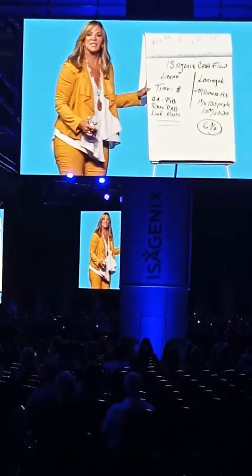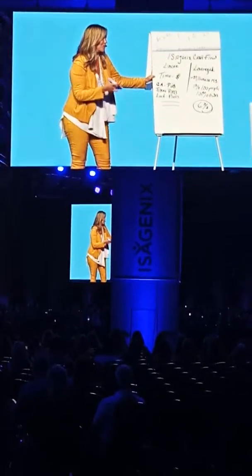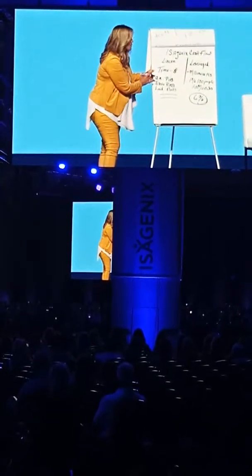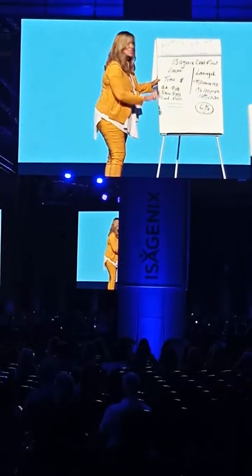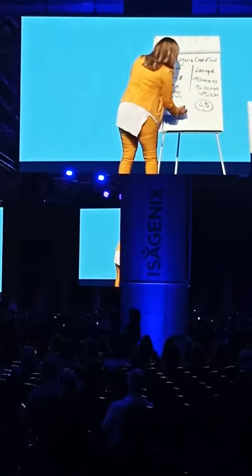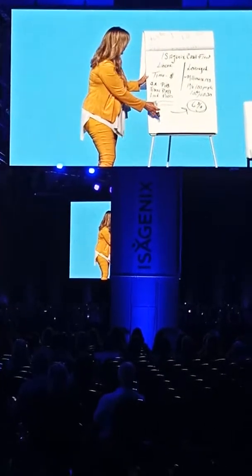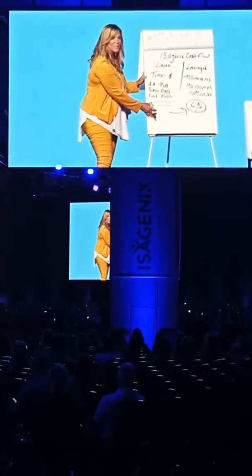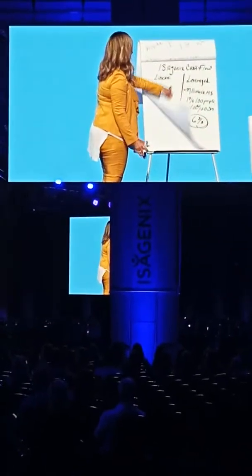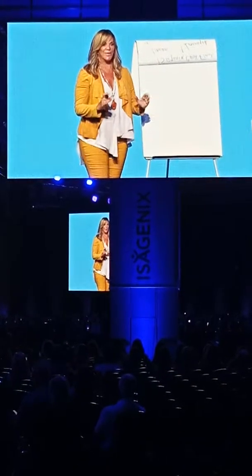All of this is still exchanging time for money — do something, get paid; don't do something, don't get paid. I don't teach this when I'm talking to somebody in the very beginning because I don't want to confuse them. But what this is all about is moving from linear income into building an asset. Would you like me to show you how to do that?